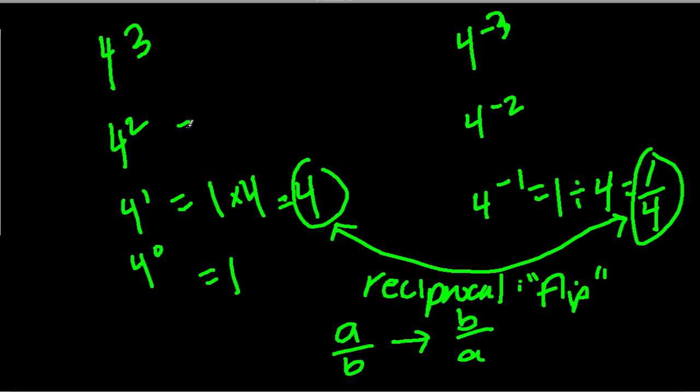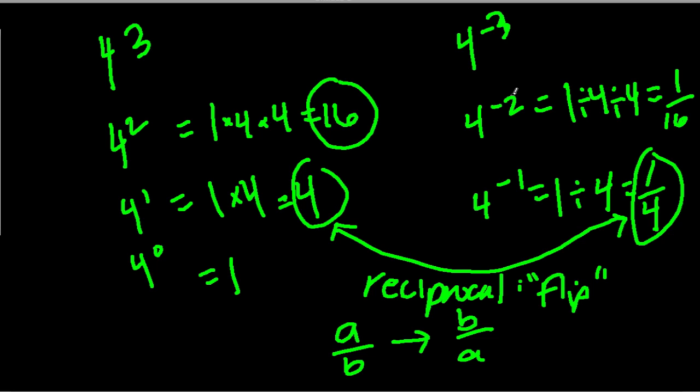So let's look at the next one. 4 to the second power. 1 times 4 times 4 is 16. 4 to the negative second. Well, we could do 1 divided by 4 divided by 4 is 1 over 16. Or, our strategy could be, if I want to figure out 4 to the negative second, is to say, what is 4 to the second? It's 16. Well, what's the reciprocal of that? 1 over 16.